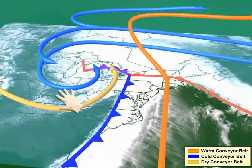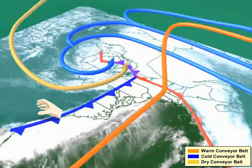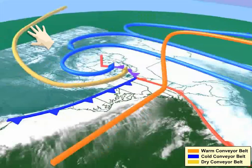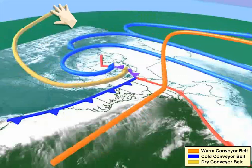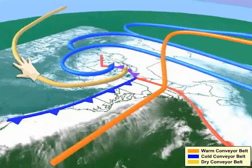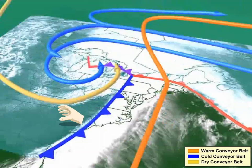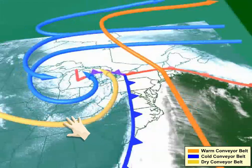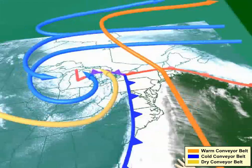Finally, we have the dry conveyor belt, marked here in yellow. The dry conveyor belt is formed by dry air near the tropopause, sinking west of the low's center, and it starts to wrap counterclockwise around the low's periphery, helping to scour out clouds and create the dry slot west of the cold front, which puts the finishing touches on the overall comma shape of the mass of clouds associated with a mature mid-latitude cyclone.